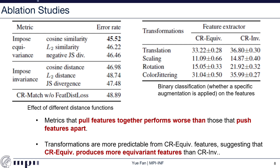On the right-hand side, we provide an analysis to demonstrate that increasing the feature distance indeed produces equivariant features. We denote the model trained with cosine similarity as CR equivariance and the model trained with cosine distance as CR invariance. We trained an SVM on top of features extracted by these two models to predict whether a certain transformation is applied to the input image. The intuition is that specific transformations should be more predictable from equivariant representations. The table shows that for all transformations — translation, scaling, rotation, and color jittering — features from CR equivariance have a lower error rate, confirming it produces more equivariant features.